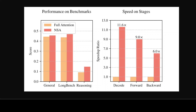There are a few key features of this model. One thing that really caught my eye from the paper is the dynamic hierarchical sparse strategy. This involves organizing data in a way that focuses computational efforts where they are most needed, balancing global context awareness with local precision by compressing tokens at a coarse level and selectively retaining the finer details of the important tokens.